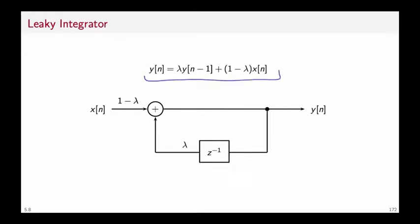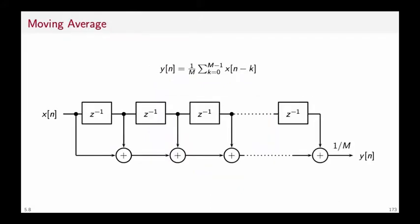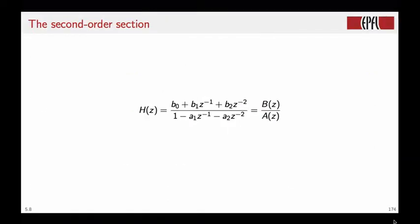We can do the same with the moving average. So here we have a series of delays that will store past values of the input up to N minus N plus 1. So here you have the input, here you have one delay, and so the output of this delay will be X of N minus 1. Here, the output of the second delay is X of N minus 2. And so on and so forth until the last delay, where you have X of N minus N plus 1. All these delayed samples are summed together, and finally, they're scaled by 1 over N.